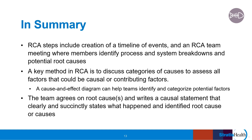In summary, root cause analysis steps include creation of a timeline of events and an RCA team meeting where members identify process breakdowns and potential root causes. A key method in RCA is to discuss categories of causes and use triggering questions to help the team assess all factors that could be causal or contributing factors. A cause and effect diagram can help teams to identify and categorize potential factors. The team agrees on root causes and writes a causal statement that clearly and succinctly states what happened and what the identified root cause was. A good causal statement can make the corrective action plan much easier to develop and helps clearly align the problem, the root cause, and the proposed actions to prevent recurrence.